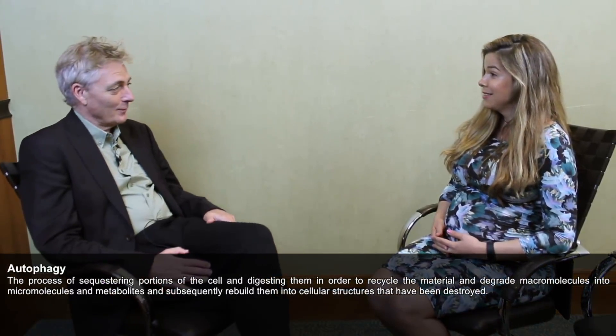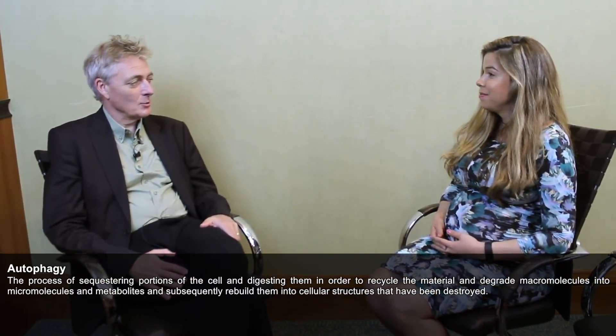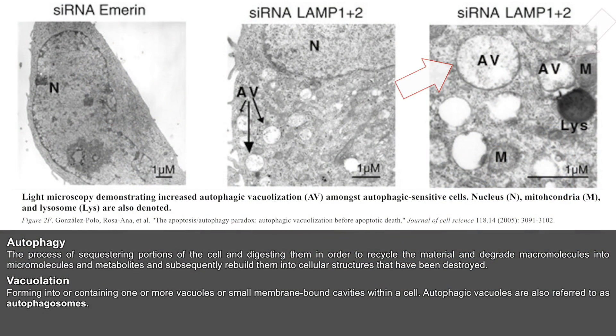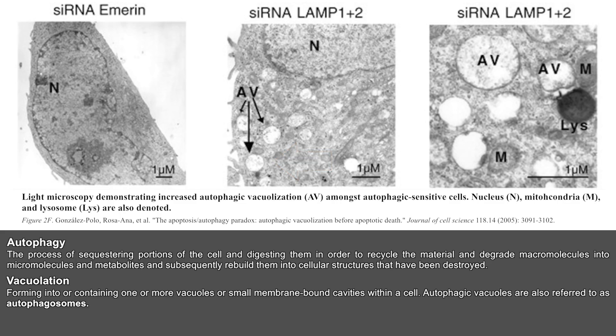Autophagy is a spectacular phenomenon in cell biology, one that you can see with your eyes because cells become vacuolated when this process is induced. You can see it by light microscopy and better of course by electron microscopy. It is a process that consists in sequestering portions of the cytoplasm of the cell and then digesting them to recycle the material and to degrade macromolecules into micro molecules and metabolites, allowing rebuilding of the structures that have been destroyed.